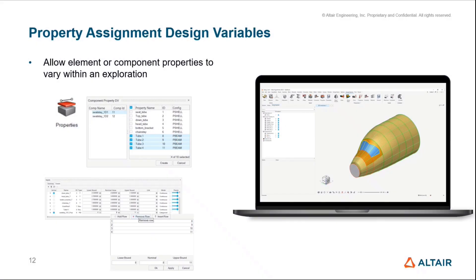The first is the Property Assignment Design Variable — a new tool, a new context in the ribbon, a new type of design variable that allows element or component properties to vary within an exploration. For those already familiar with Design Explorer, this is very similar to the Material design variable, where you can pick a part, component, or entity in your session and allow its material to be varied throughout the exploration by creating a categorical variable for material assignment.